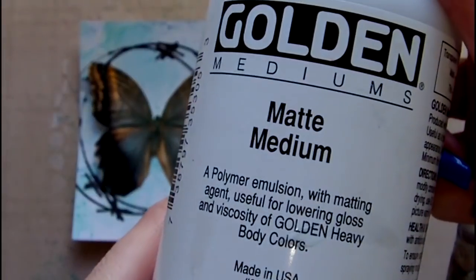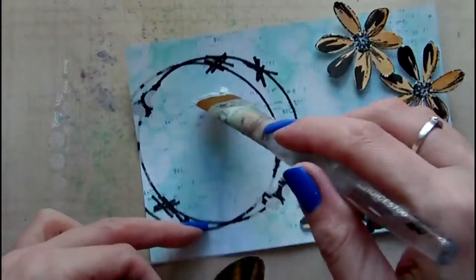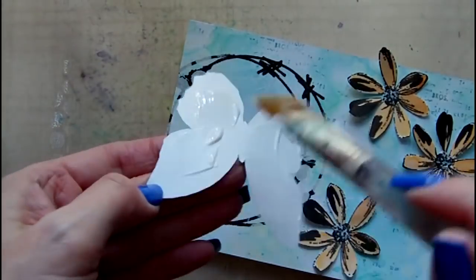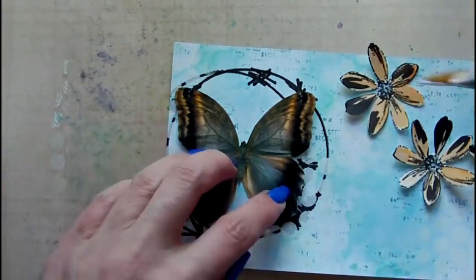To attach my elements to the postcard, I'm using Golden matte medium. After this, I'm going to use a Micron pen to add a small border to my postcard.